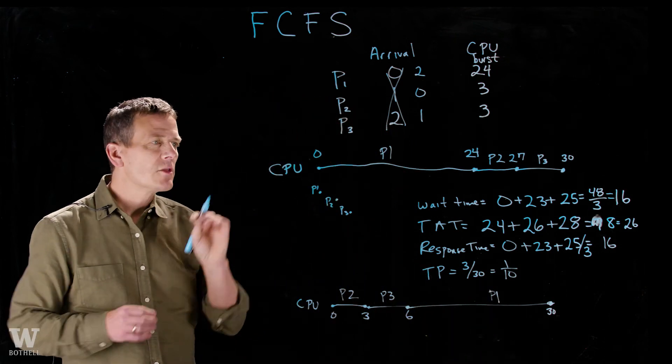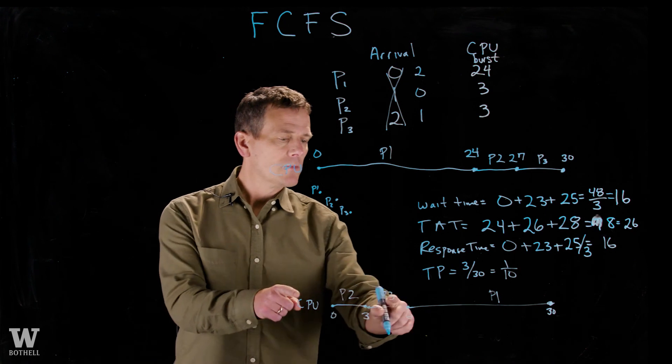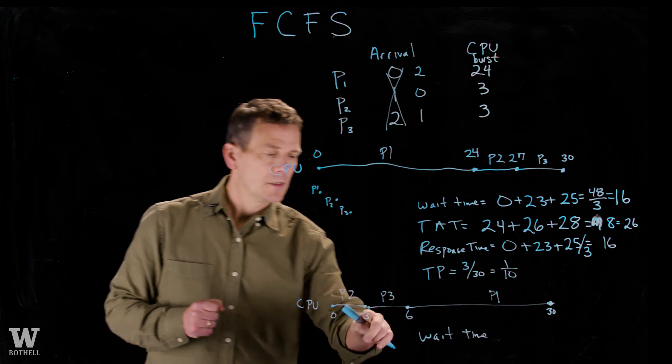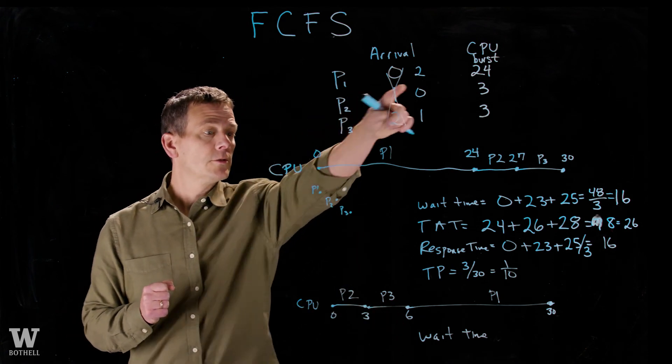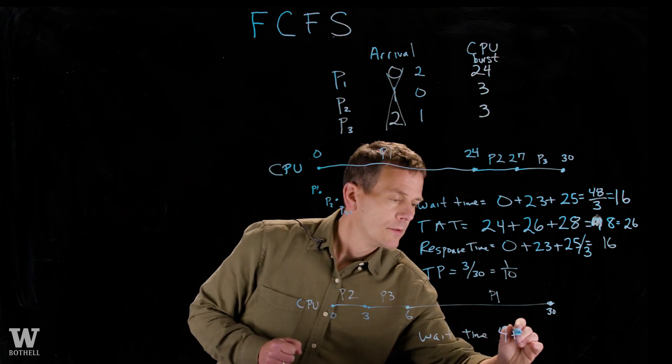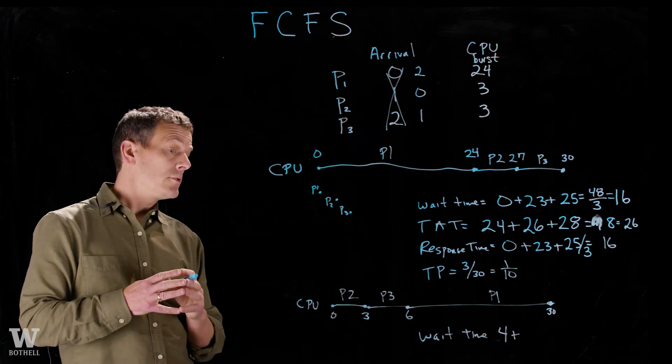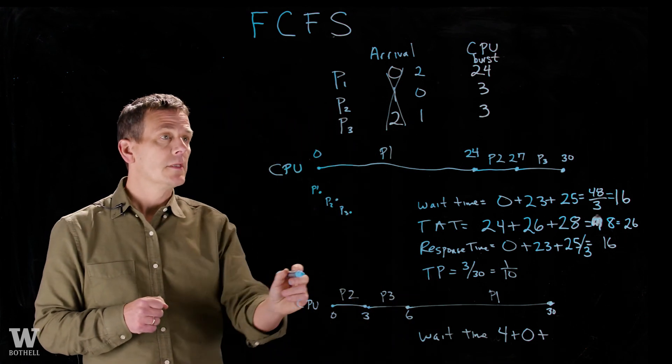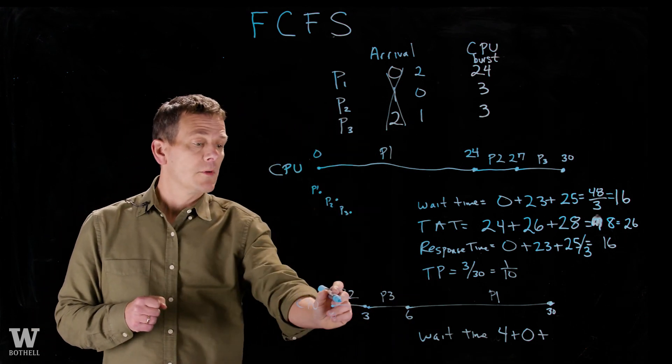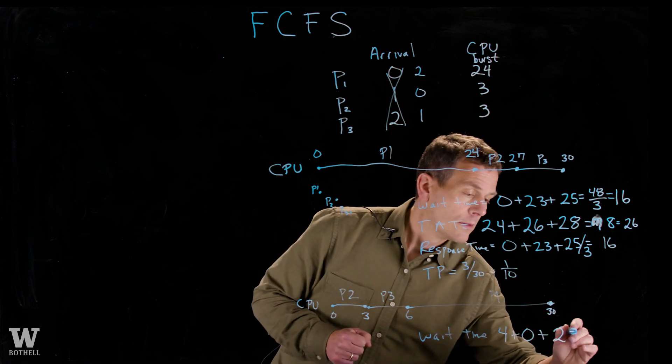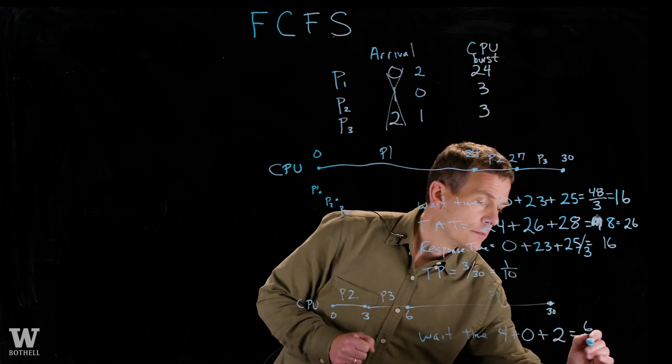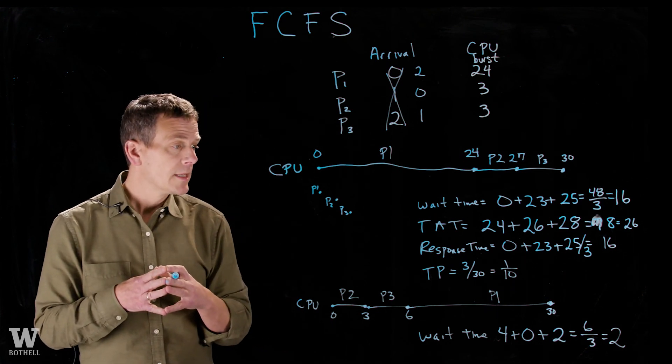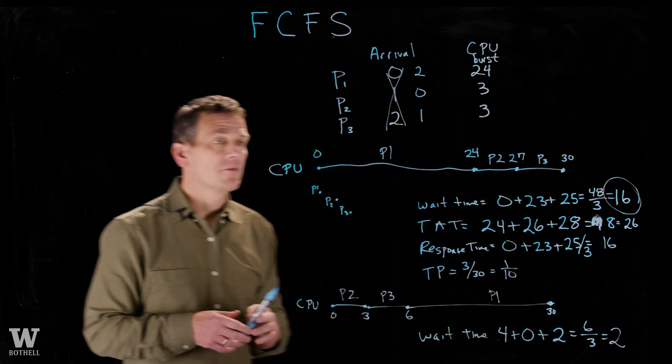Let's take a look at just the wait time in this case. The wait time for process 1 is 4 because it came in at 2 and it ran at 6. The wait time for process 2 is 0, and the wait time for process 3 in this case is 2. It came in at 1, started running at 3. So here, notice we get an average wait time of 2 as compared to a wait time of 16.